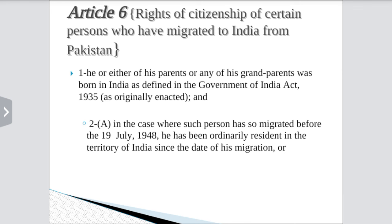Article 6 — rights of citizenship of certain persons who have migrated to India from Pakistan. There are two clauses: if he or either of his parents or any of his grandparents was born in India as defined in the Government of India Act 1935 (undivided India), and in the case where such person has migrated before 19th July 1948 and has been resident in the territory of India since the date of migration and is now settled in India.